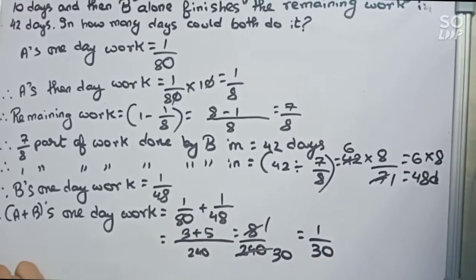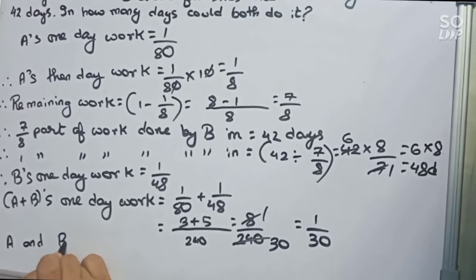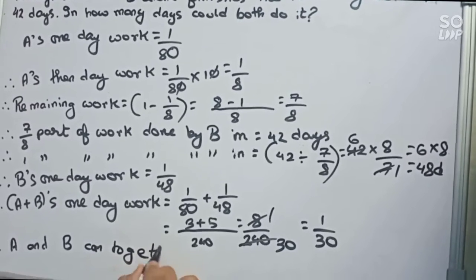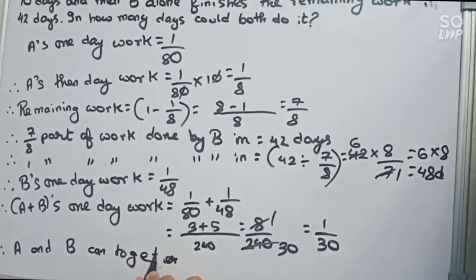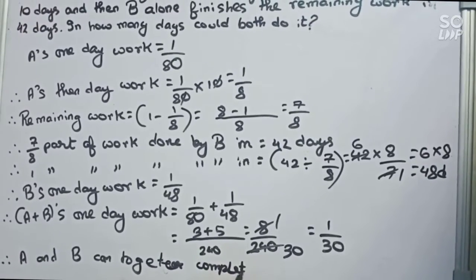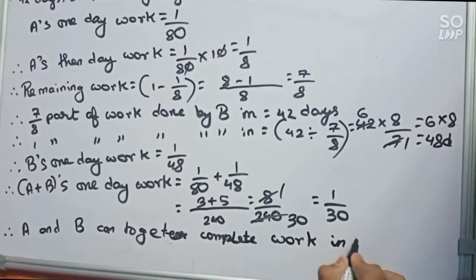Therefore, A and B can together complete work in 30 days.